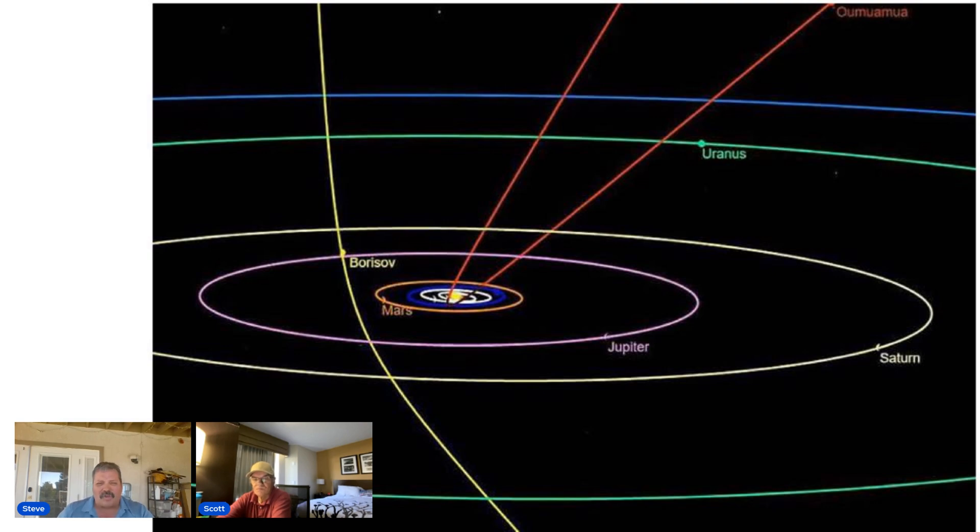The cigar-shaped Oumuamua, so some scientists were kind of thinking that this was an alien craft coming towards Earth because it was cigar-shaped. And that's what they were picking up on scopes and stuff. So that's what all this mystery is about.